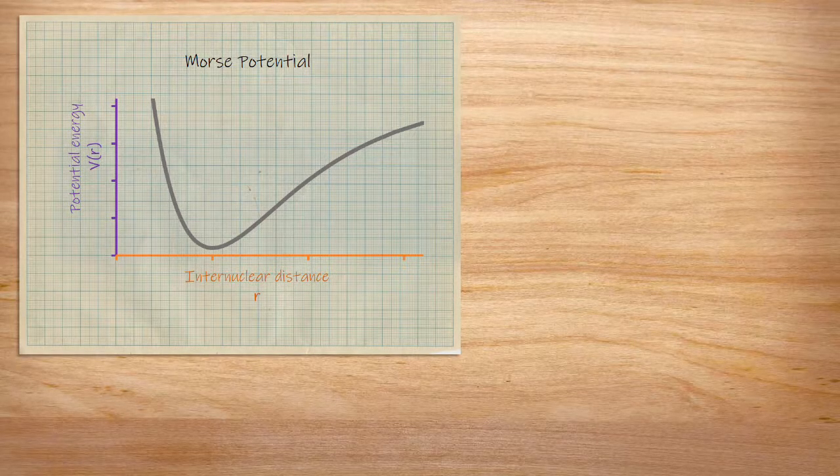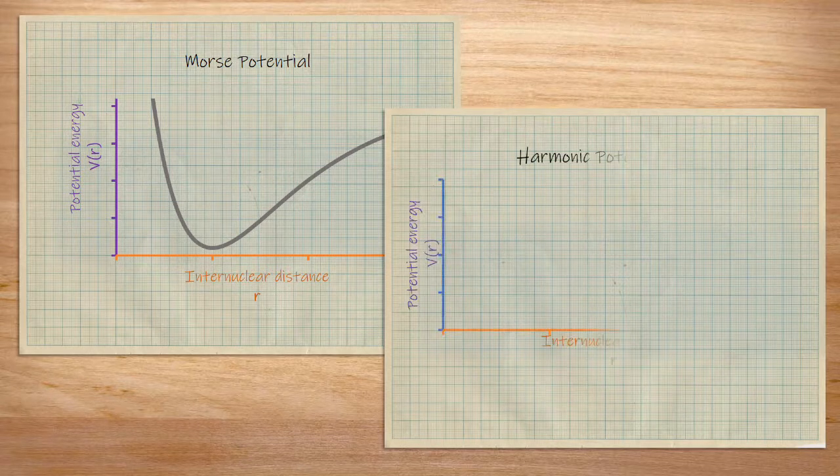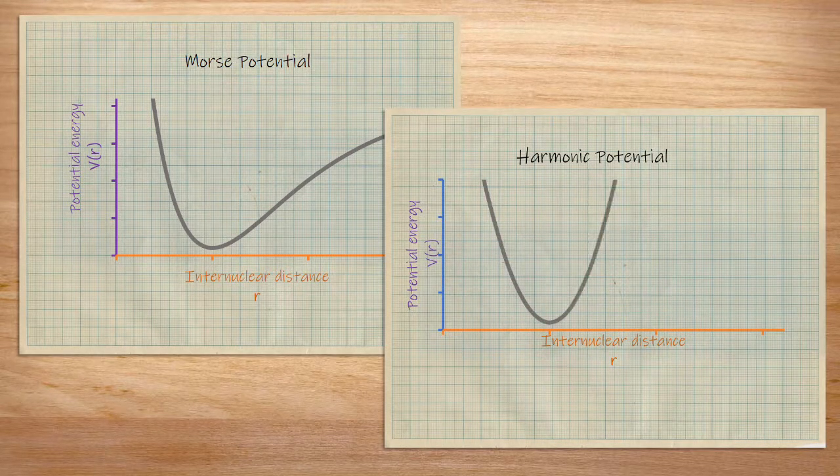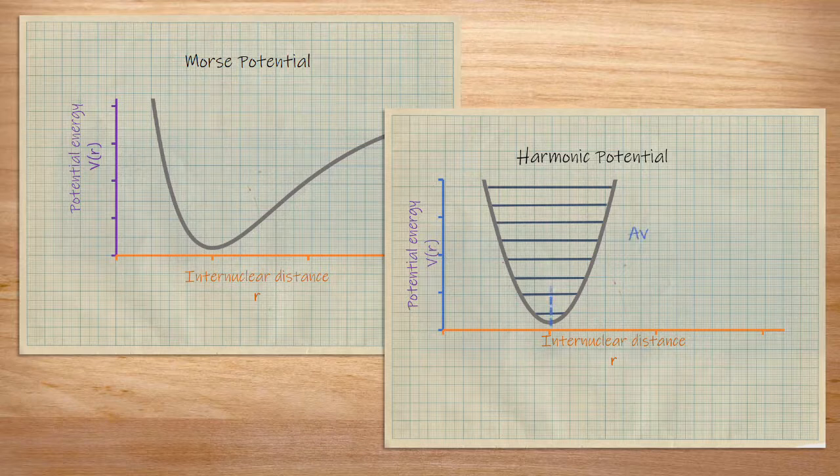The remaining difference is in how energy levels work. In the harmonic oscillator, the energy levels are spaced perfectly evenly and the equilibrium or average bond distance remains the same at any energy level.